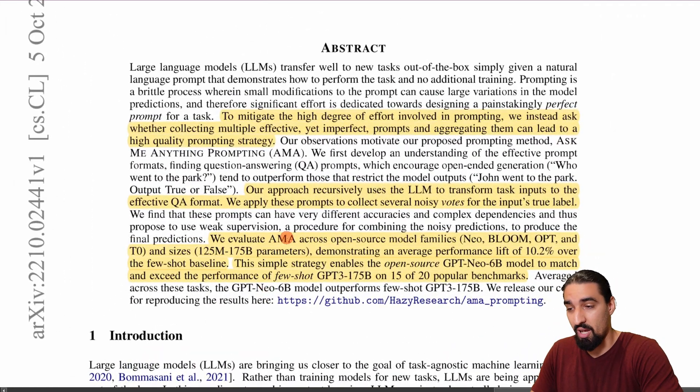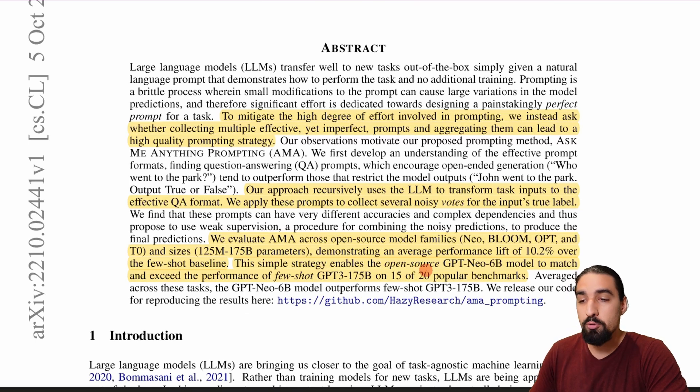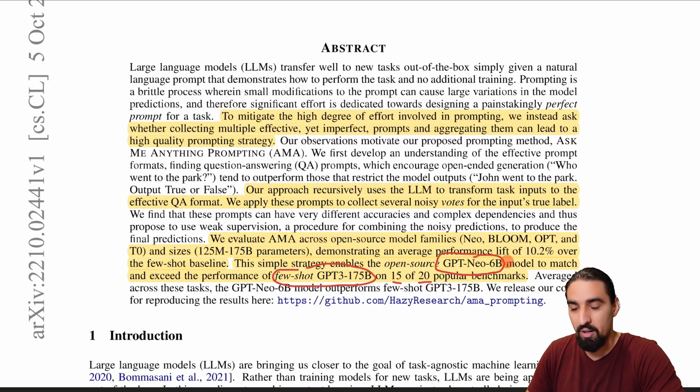So we evaluate this approach AMA across open source model families such as Neo, Bloom, Opt and T0 and sizes 125 million to 175 billion parameters demonstrating an average performance lift of 10.2% over the few shot baseline. This simple strategy enables the open source GPT Neo 6b model to match and exceed the performance of few shot GPT 3 70b on 15 out of 20 popular benchmarks. So that's huge and in this video I'm going to briefly walk you through the idea behind the paper.